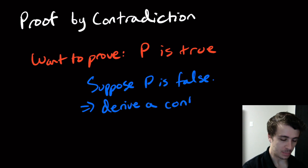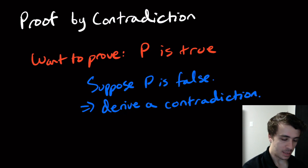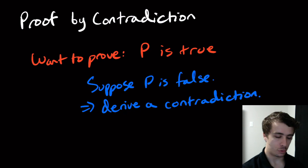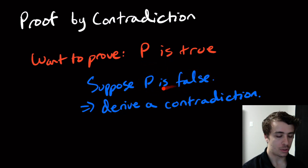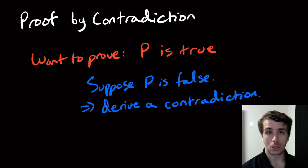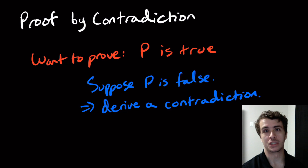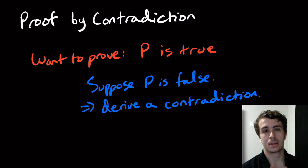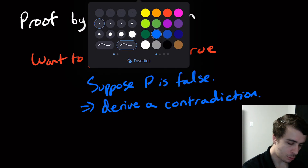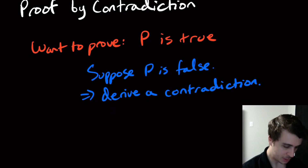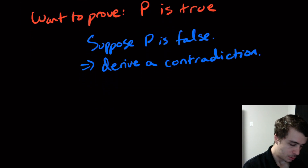A contradiction is something that cannot possibly be true. So it might actually be really hard to prove that the original thing is true, but it's significantly easier to show that if it's false then that's not possible. Instead of directly proving something, we instead prove that the negation of the statement cannot possibly be true.